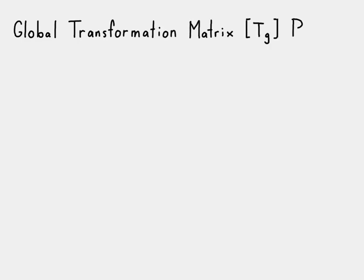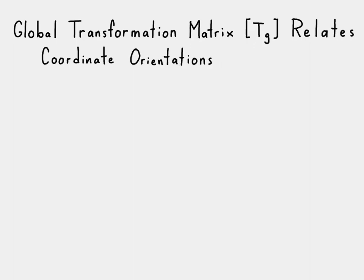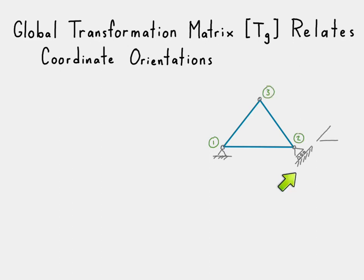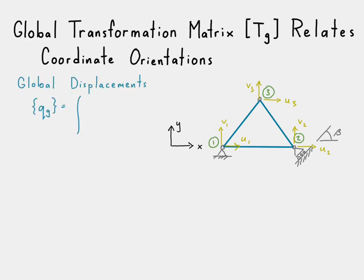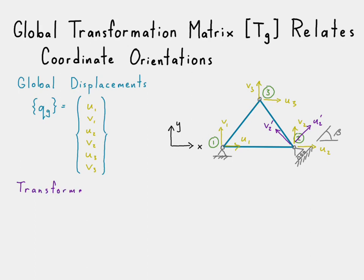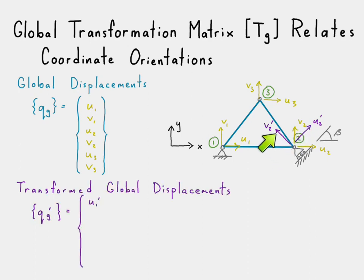The global transformation matrix's whole purpose is to relate coordinate orientations. Let's take a look at our system again. There's our off-axis constraint at node two. We can draw the global displacements here — the horizontal displacements noted by the u's and the vertical displacements noted by the v's. Now we'll draw a transformed set of coordinates here at node two.